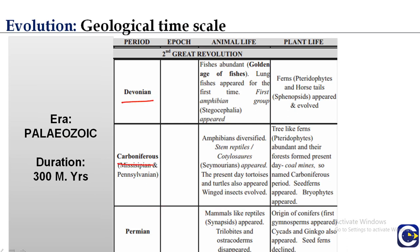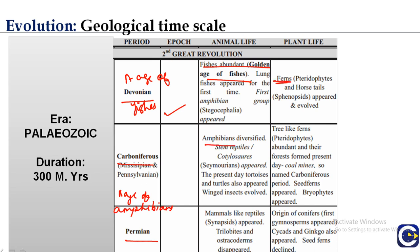In the Devonian period, fishes were abundant — it is known as the golden age of fishes. The Carboniferous period of the Paleozoic is known as the age of amphibians. Ferns appeared and evolved, amphibians diversified, and tortoises and turtles also appeared. Winged insects evolved, reptiles originated, and adaptive radiations of amphibians occurred. Tree-like ferns were abundant and whole forests formed.